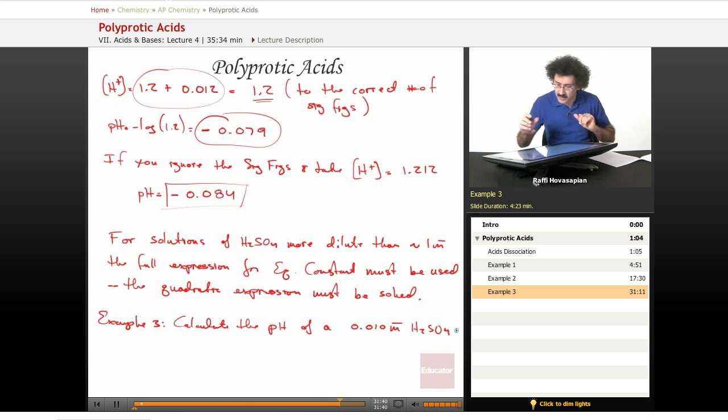Let's take a look at what we have. We have our major species: H+ from the first dissociation, HSO4- from the first dissociation, and water. These two are going to dominate the equilibrium.